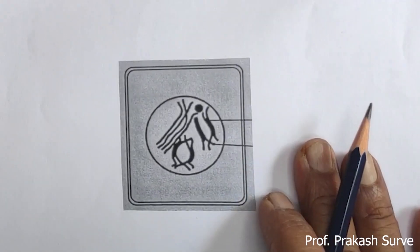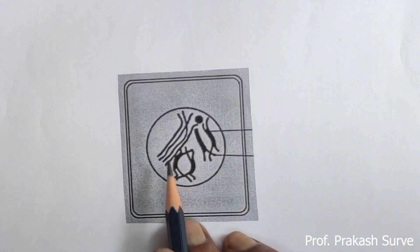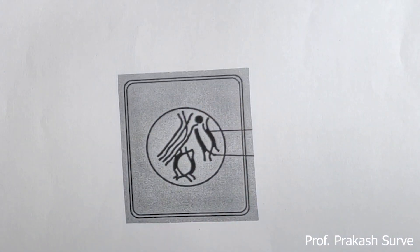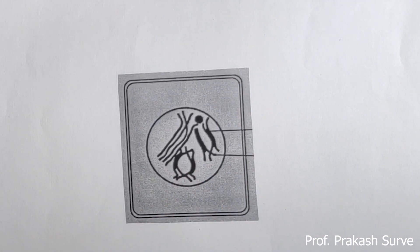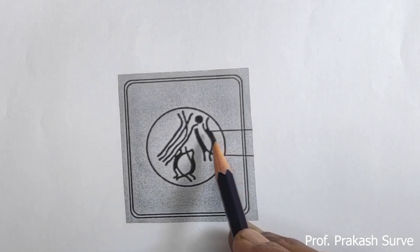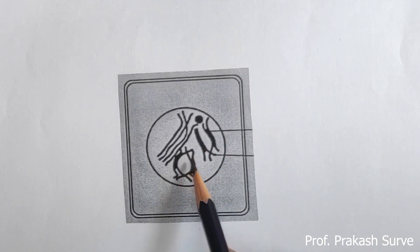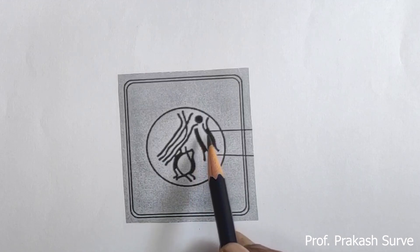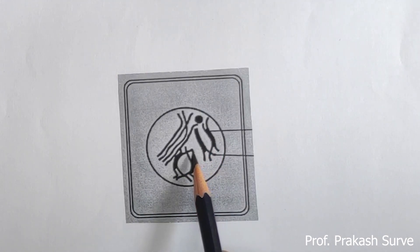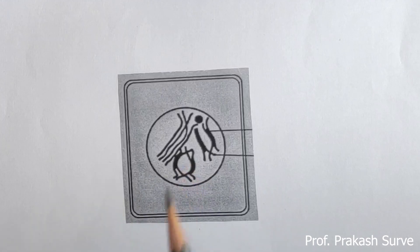The fourth stage is diplotene. You will write: it is the diplotene stage of prophase one of meiosis one. What we observe: the homologous chromosomes start repelling from each other and move away from one another, but they remain attached at the chiasmata.